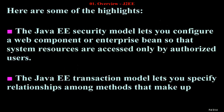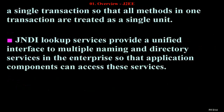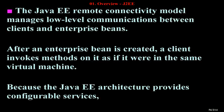The Java EE security model lets you configure a web component or enterprise bean so that system resources are accessed only by authorized users. The Java EE transaction model lets you specify relationships among methods that make up a single transaction so that all methods in one transaction are treated as a single unit. JNDI lookup services provide a unified interface to multiple naming and directory services in the enterprise so that application components can access these services. The Java EE remote connectivity model manages low-level communications between clients and enterprise beans.